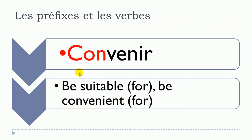The first thing that we could add would be C-O-N, con. And then we would get CONVENIR. And here you will see for each verb the translation in English. CONVENIR.